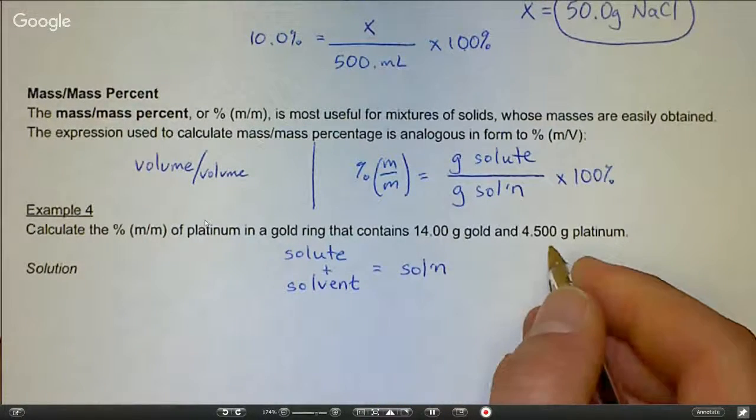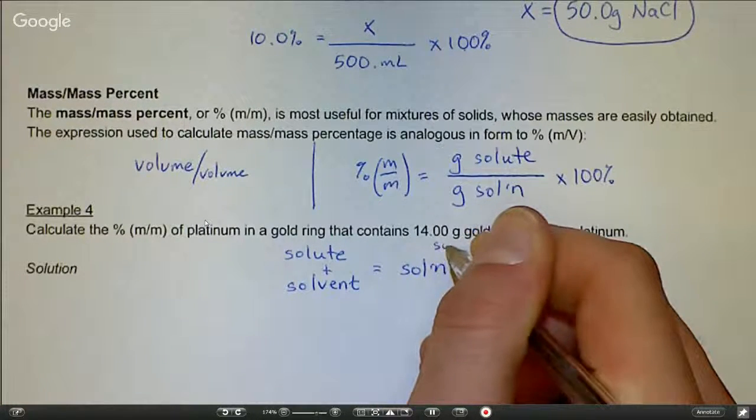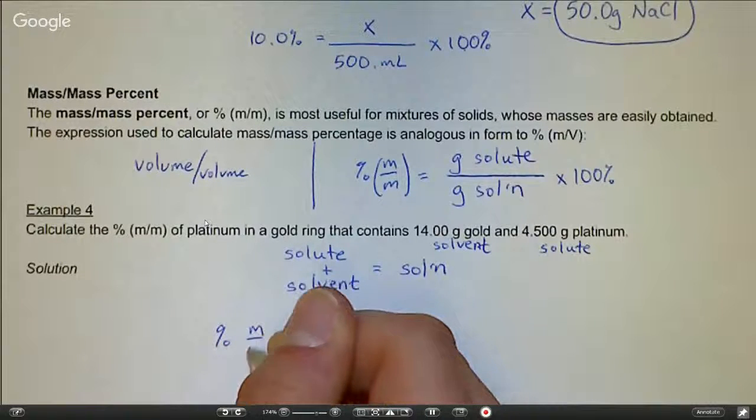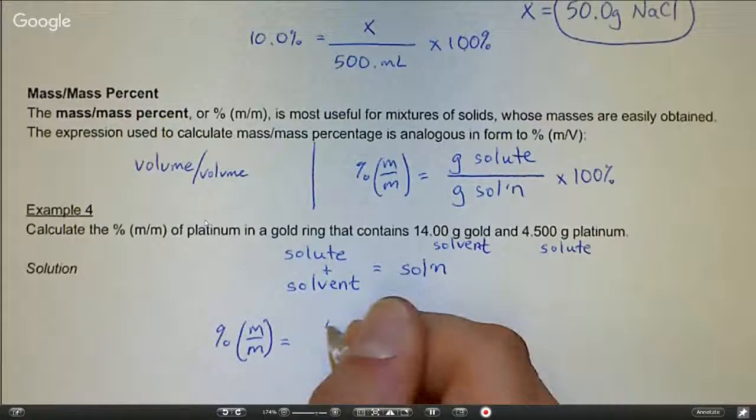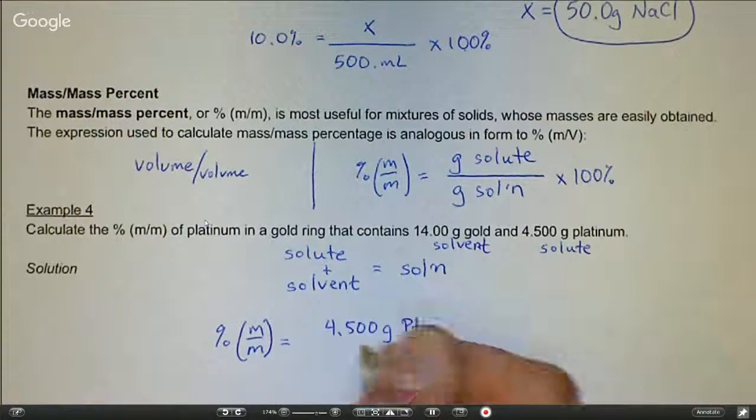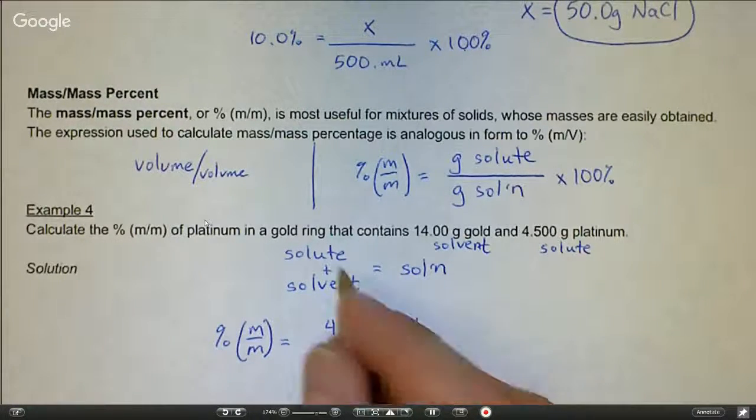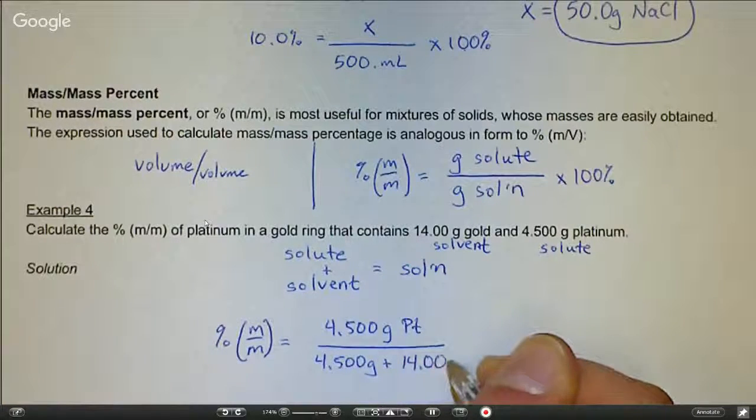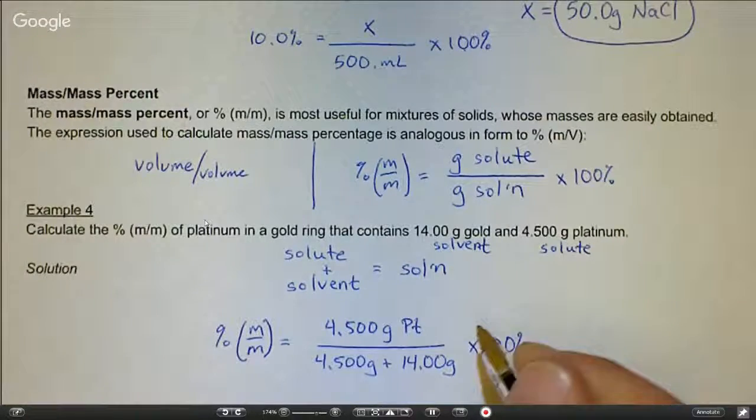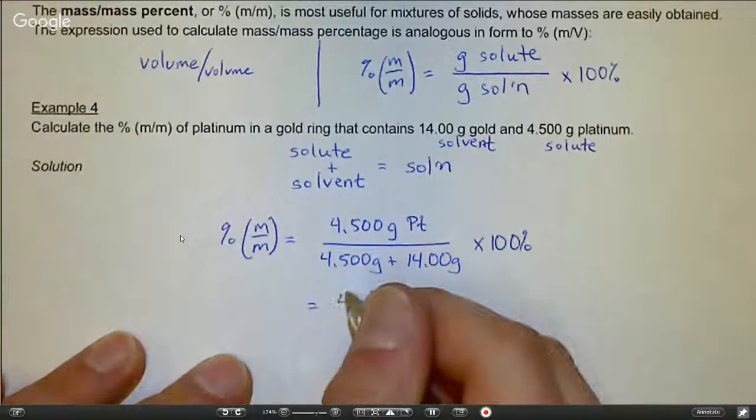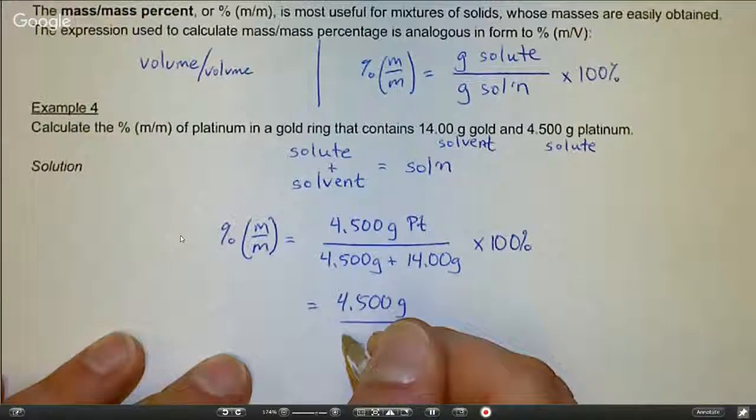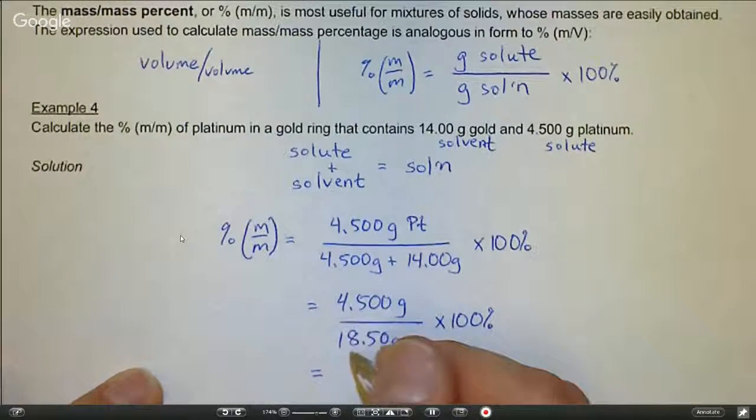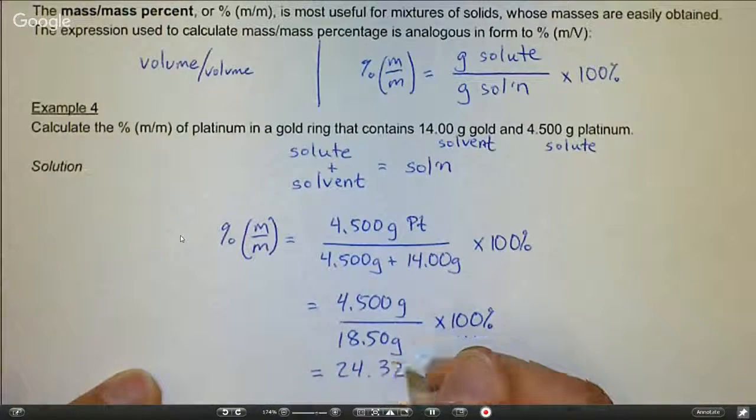To set up our equation, percent mass mass equals grams of solute, so 4.500 grams of platinum, and our solution goes on bottom, which is the addition of the solute and solvent, so we'd add 4.500 grams and 14 grams and multiply by 100 percent. This simplifies to 4.5 grams over 18.5 grams times 100 percent, which calculates out to 24.32 percent of platinum.